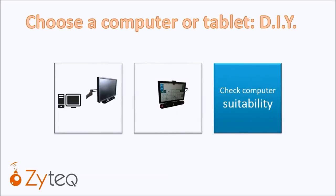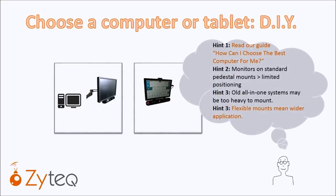Step one: choosing a computer. If you're starting with the selection of a computer, you may be choosing between an existing desktop Windows computer or perhaps buying new Windows tablets. With either option we suggest you start with our guide to check that the specifications and features are suitable for the eye gaze systems. A desktop monitor on a pedestal stand provides only limited positioning options, so if you have students that require specialised positioning, they won't be able to use the system, as the monitor and eye gaze camera need to be angled in the same plane as the student's face.